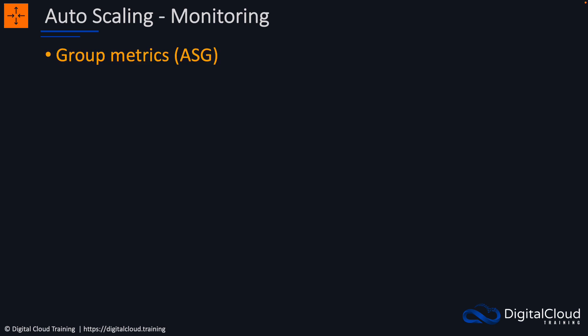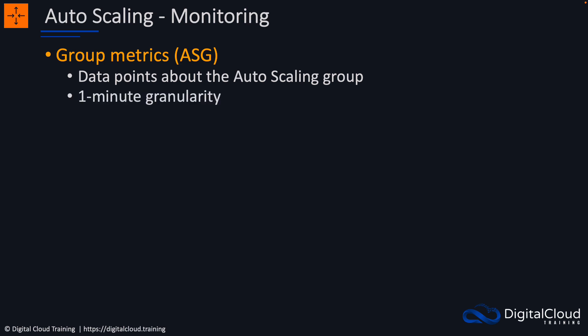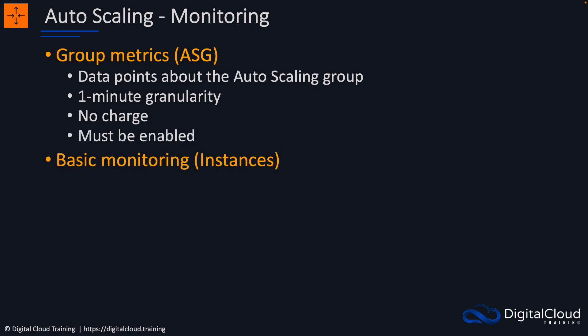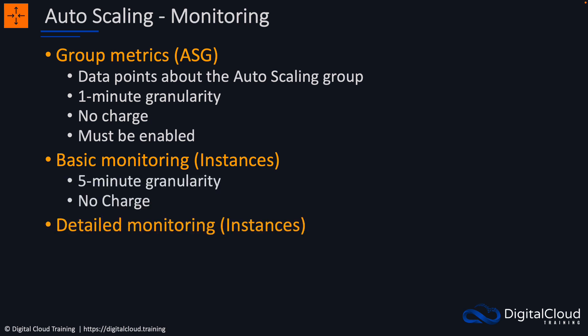With auto scaling, we also have monitoring. We have group metrics, which are data points about the auto scaling group — they have one-minute granularity and there's no charge, but they must be enabled manually. Basic monitoring is for instances, with five-minute granularity and no charge. We also have detailed monitoring for instances — that's one-minute granularity and charges do apply.